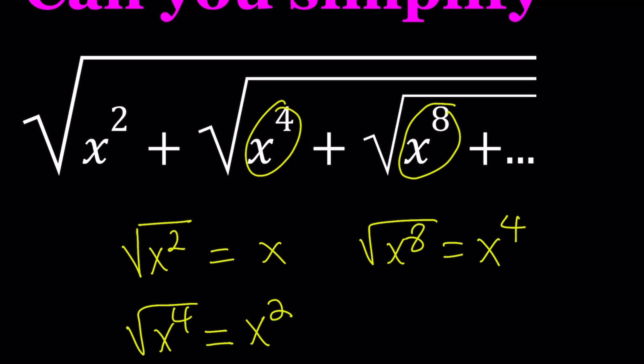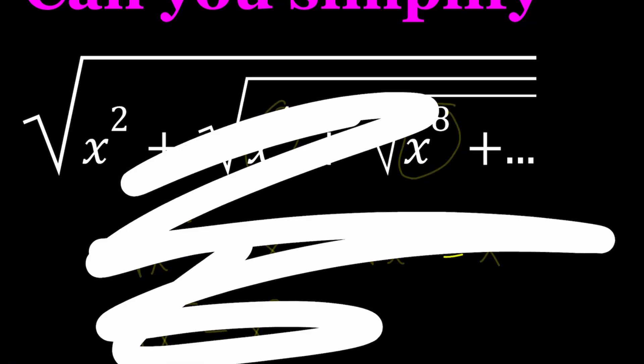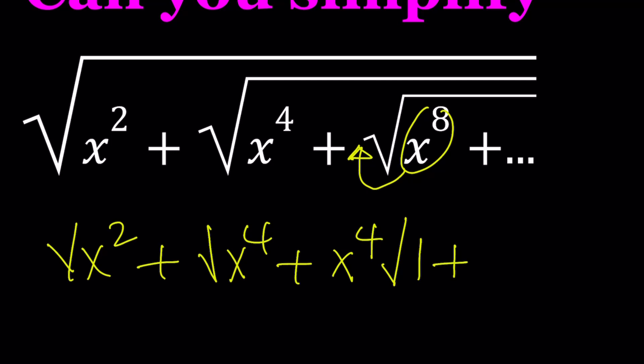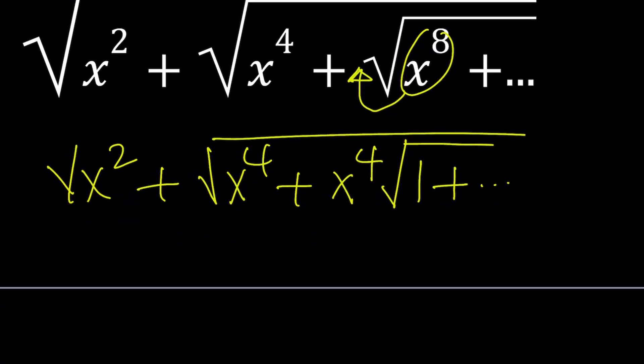So think about it this way. If I take out x to the eighth, let's clean this up and start over. If we take it out, that's going to give us x to the fourth here. So let's go ahead and bring it outside. So square root of x squared plus the square root of x to the fourth plus this x to the fourth when we take it out. But you're going to have something inside the radical, right? Because you took out the whole thing, you're going to have a 1. And then plus, you're going to have something else inside.